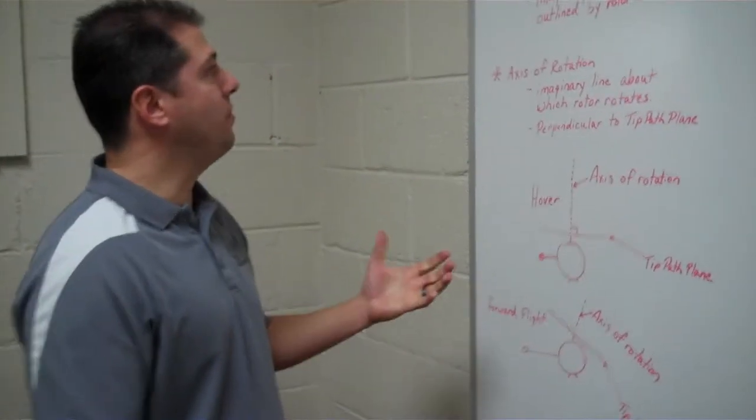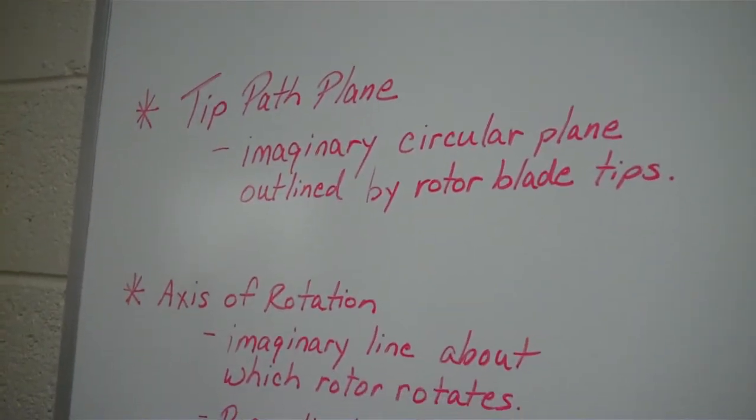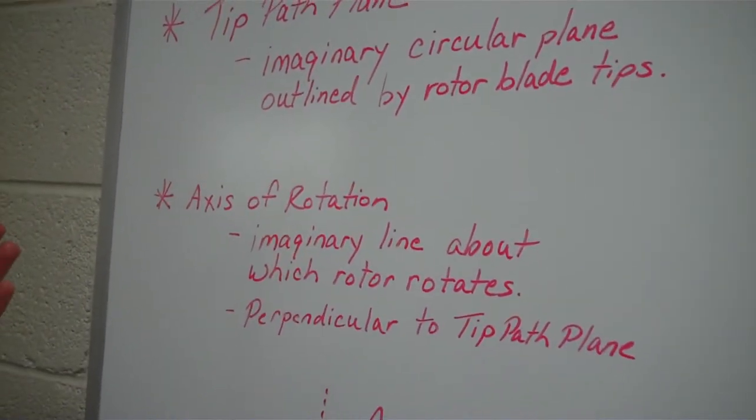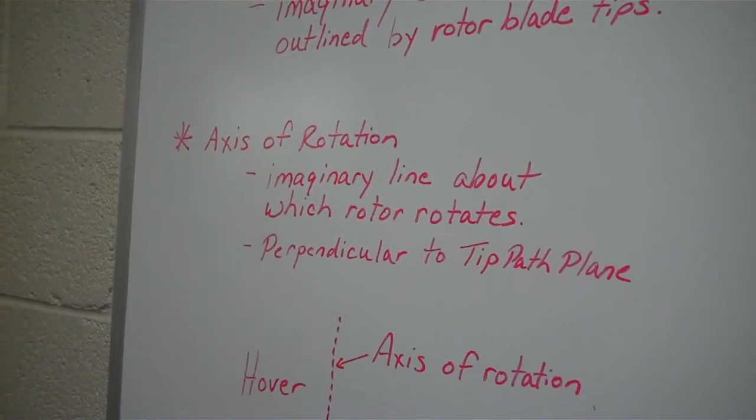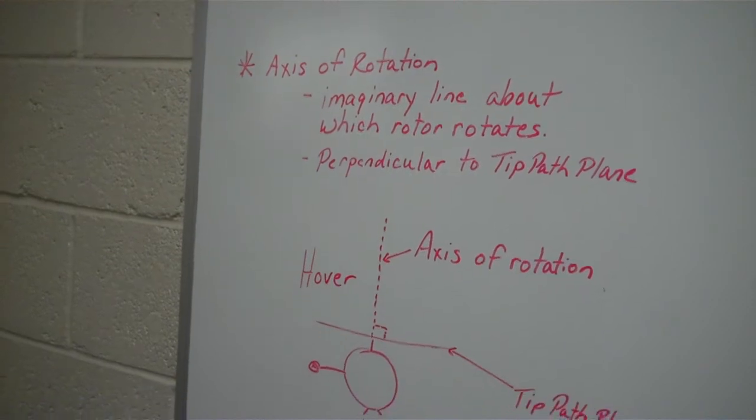And those are the true definitions that we have. Tip path plane is an imaginary circular plane outlined by the rotor blade tips, and the axis of rotation is the imaginary line about which the rotors rotate.